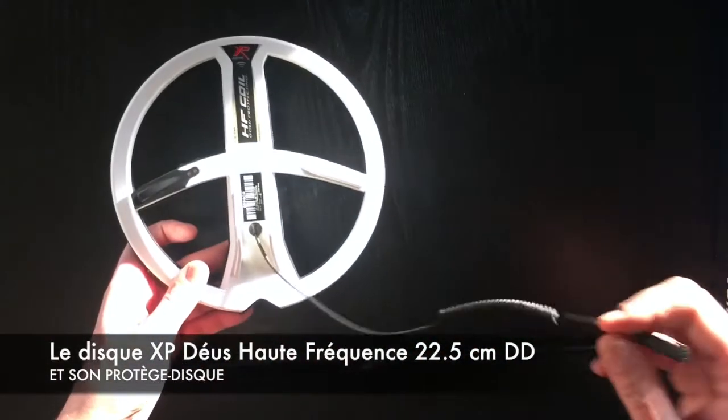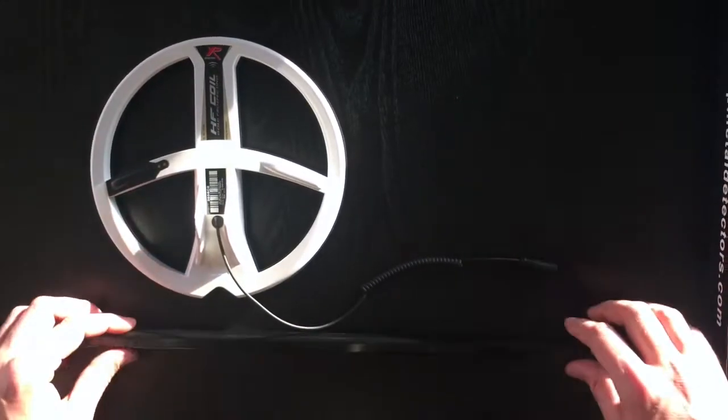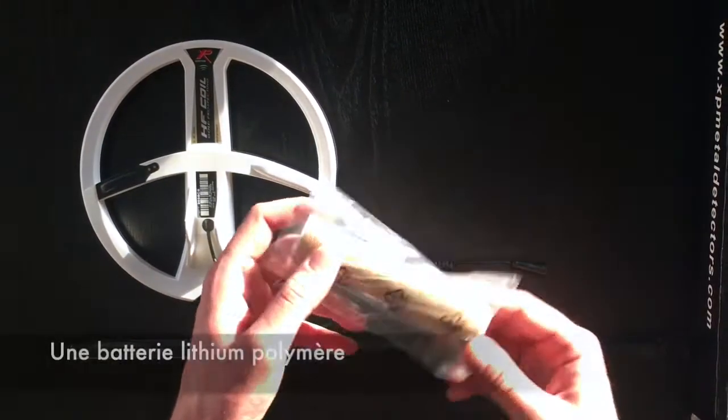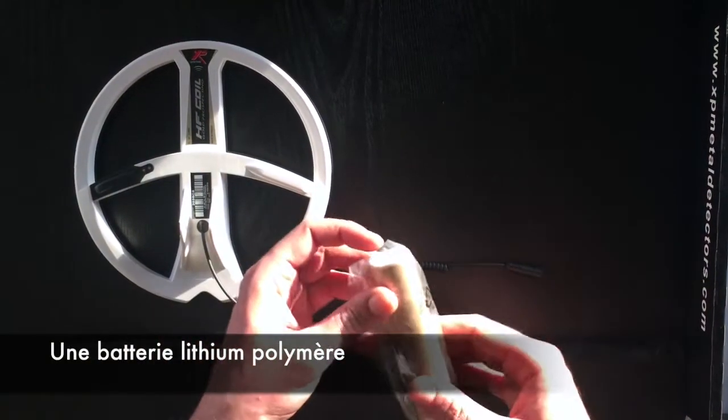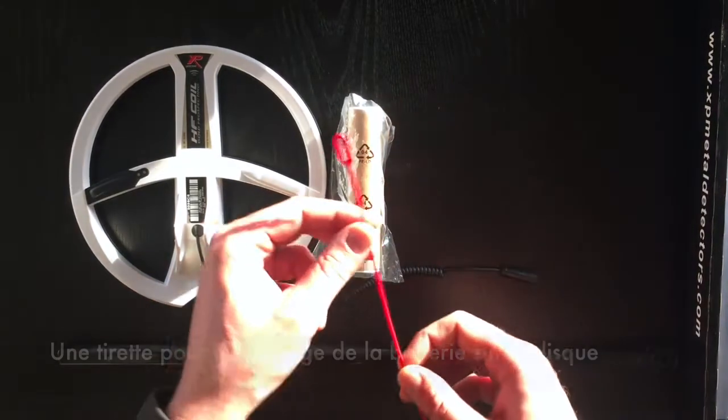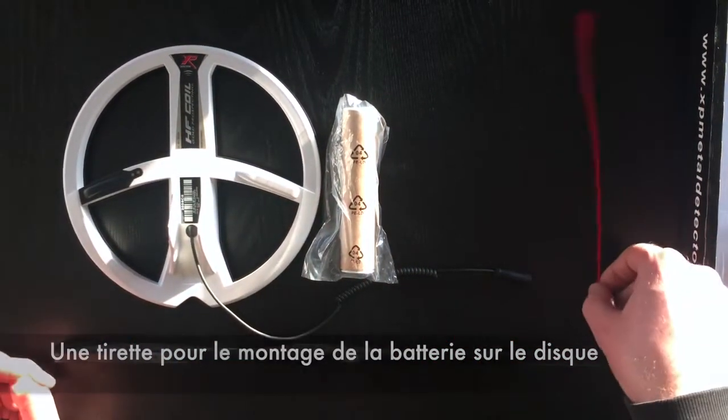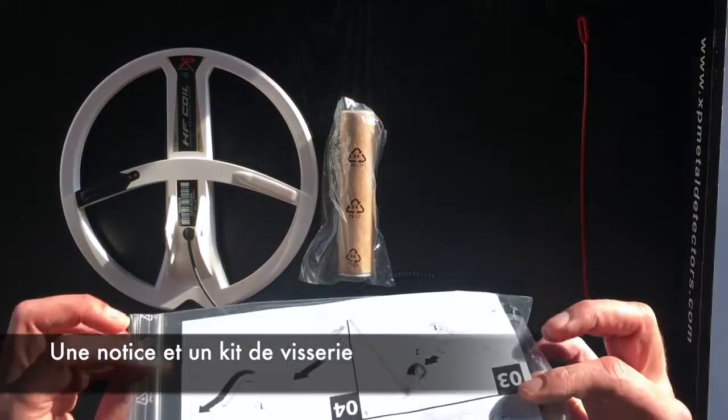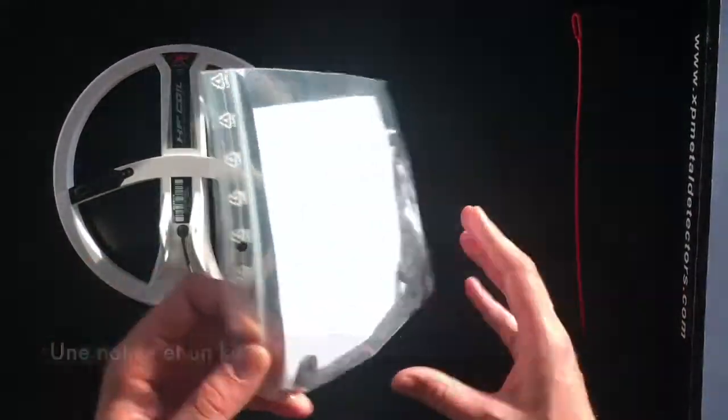We find the bat-can, the famous XP high-frequency 22cm coil. Inside we have a little cylinder that contains the battery, a little plastic piece that we will see later, and obviously the mounting instructions with the kit of screws inside.